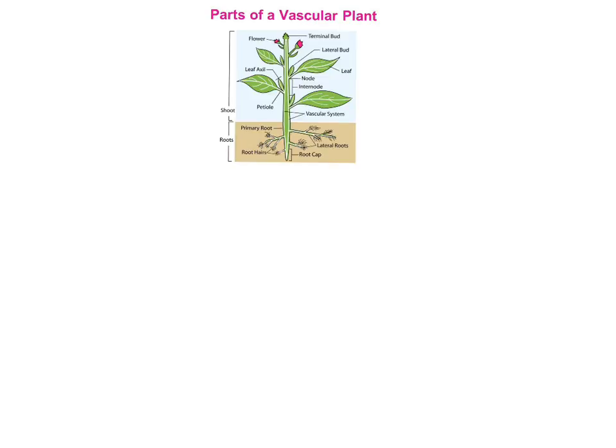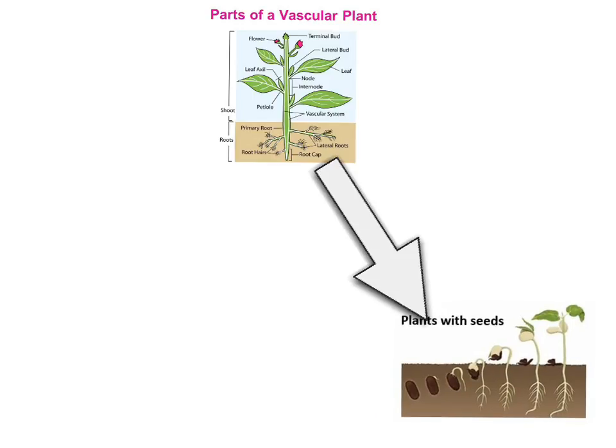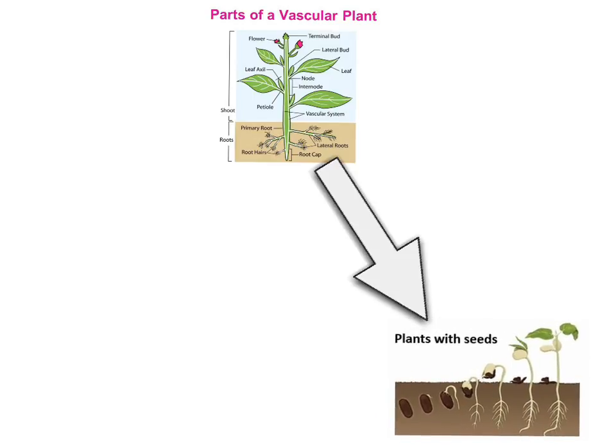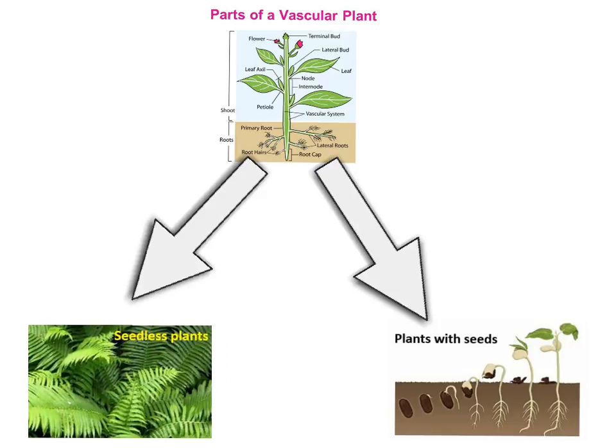Now let's take a look at vascular plants. Vascular plants have vascular tissues that help transport nutrients up and down the plant — very similar to how our circulatory system works with blood. Vascular plants can divide into two groups: plants with seeds, and seedless plants.